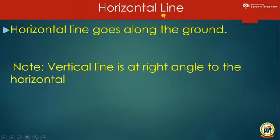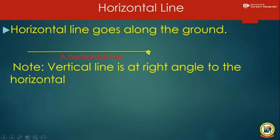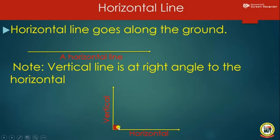The second class of line is the horizontal line. A horizontal line goes along the ground. A vertical line is always at right angle to the horizontal line. This is a vertical line, and this is a horizontal line, and a right angle is formed at the spot where they meet. So a vertical line and a horizontal line are both at right angle to each other.